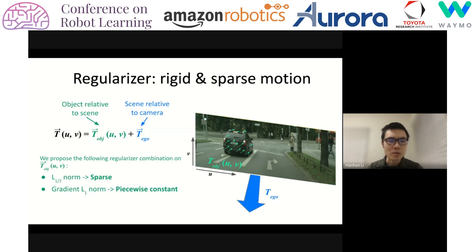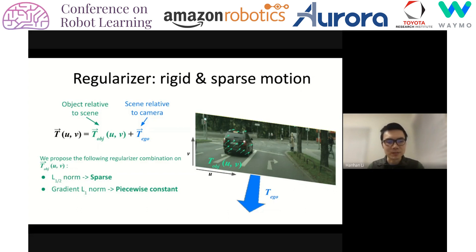Here's how we regularize the object motion map without semantic cues. We have two observations on object motion: it tends to be sparse, and it tends to be piecewise constant. It tends to be sparse because it only exists for moving objects. It tends to be piecewise constant because most of the time objects are making translational motion — constant within the region of an object, constant at a different value for a different object, and zero on the background. We apply an L1-half norm on the object motion map to encourage sparsity, which performs better than the L1 norm. We also apply an L1 norm on the gradient of the object motion map to encourage it to be piecewise constant.